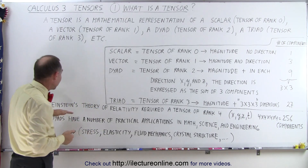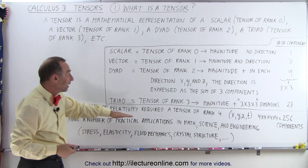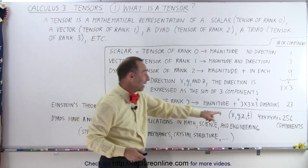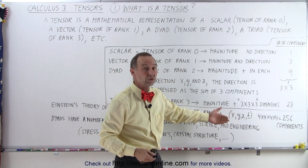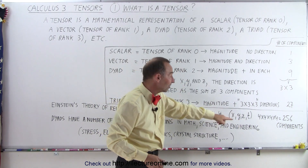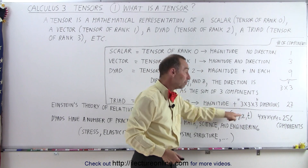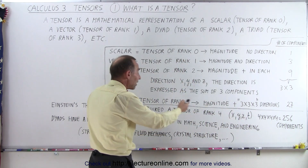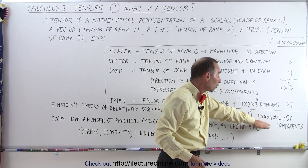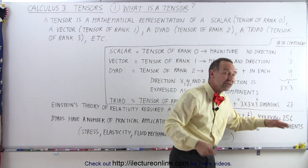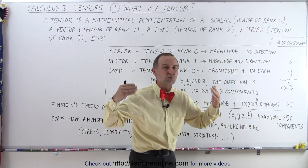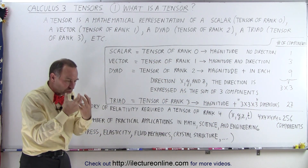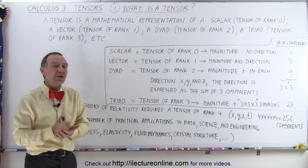It turns out that Einstein's theory of relativity required a tensor of rank 4. In other words, we have x, y, and z — the three components describing the dimensions of space — and time as a fourth component. Since we had a tensor of rank 4, we needed 4 times 4 times 4 times 4, or 256 components, to describe what happens in the theory of relativity and provide a physical construction to describe that theory.